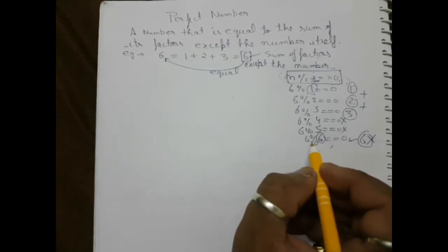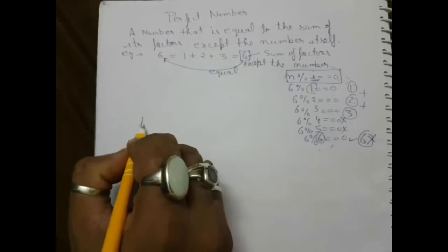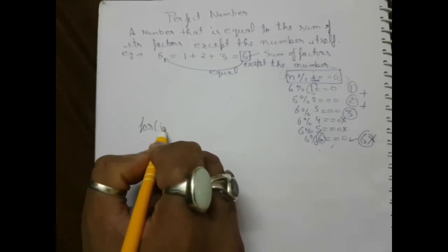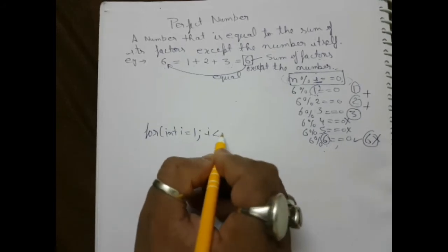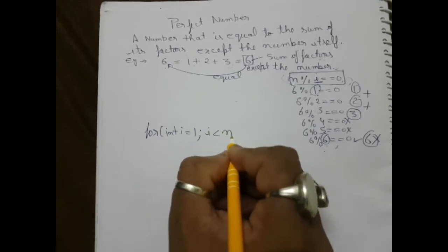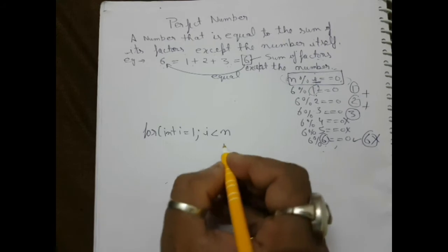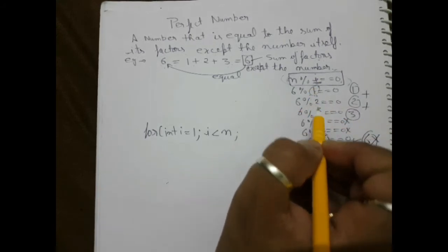The loop structure is: for int i equals one, i less than the number, then i plus plus. Inside the loop, what will be there?